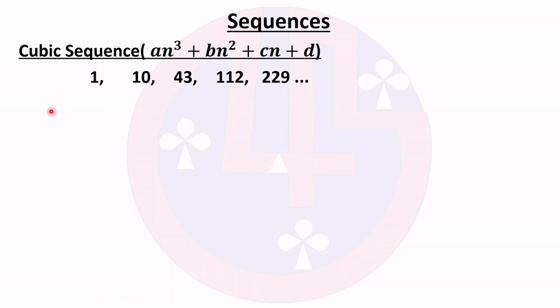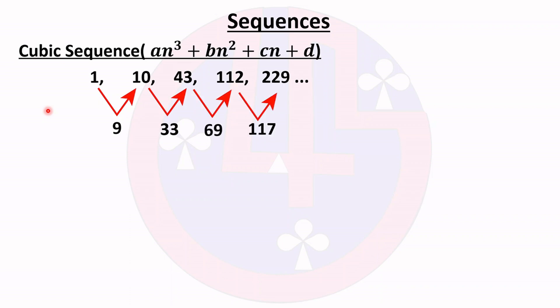First we can find the first differences. 10 minus 1 gives 9. The next difference is 33, then 69, then 170. These differences are not the same.